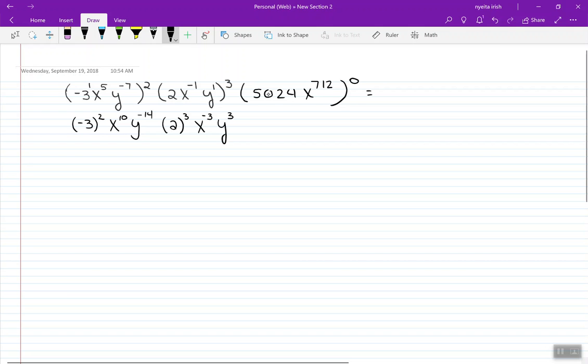This looks a little scary, but when you raise anything to the zero power, it's automatically going to be just the number one. So that took care of that whole term right there. Anything to the zero power is one. So now let's go back and do some simplifying here.